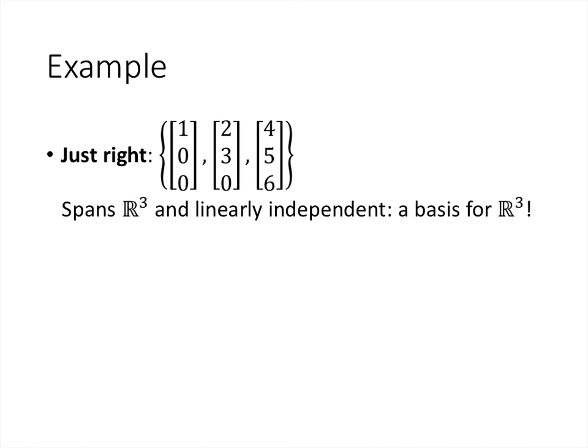The way to think about this is that a basis has to have enough vectors to span the space you want, but it can't have too many vectors, otherwise those vectors will not be linearly independent. So there's a balance between spanning and linear independence that gives us something that's just right — that gives us a basis.